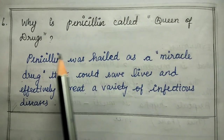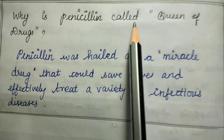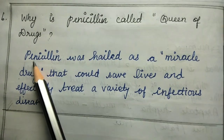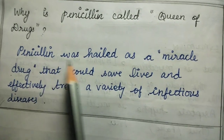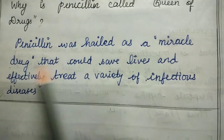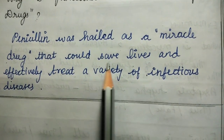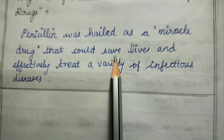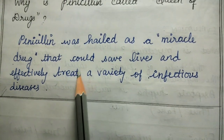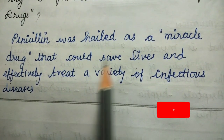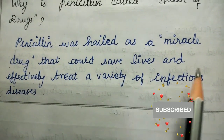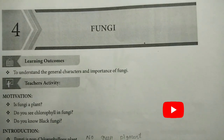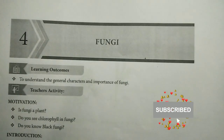Sixth question: why is penicillin called the queen of drugs? Penicillin was a miracle drug that could save lives. It treats infection and disease efficiently and usefully. That is why it is called the queen of drugs. The Fungi lesson has a total of six questions answered.